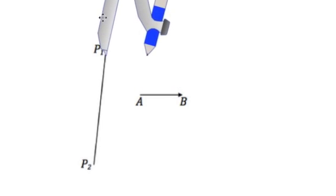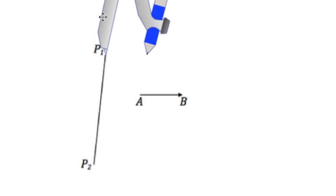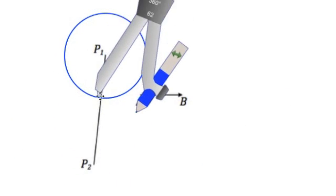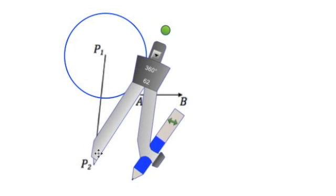You're going to copy that distance and make circles at each point on the object that you're going to translate. So in this case, we'll make a circle at P1 and P2.